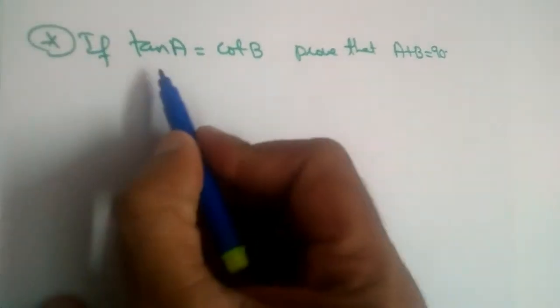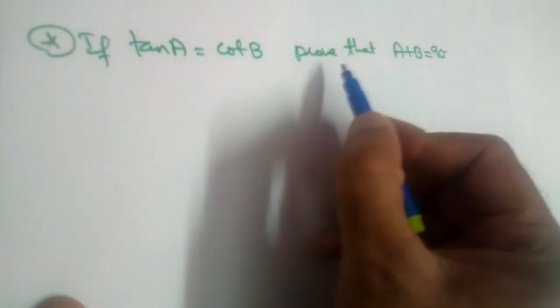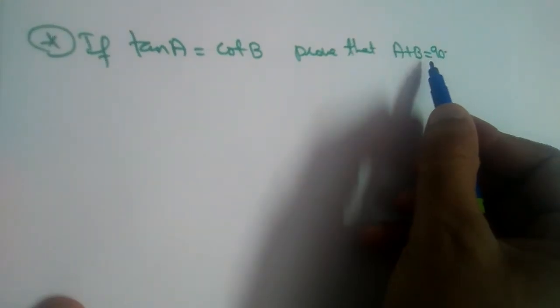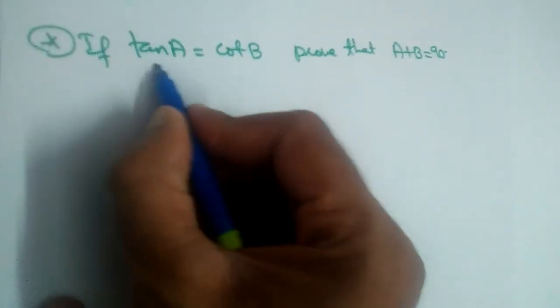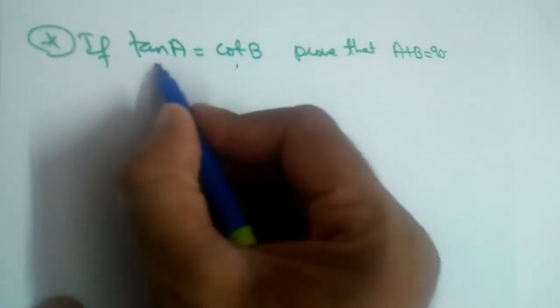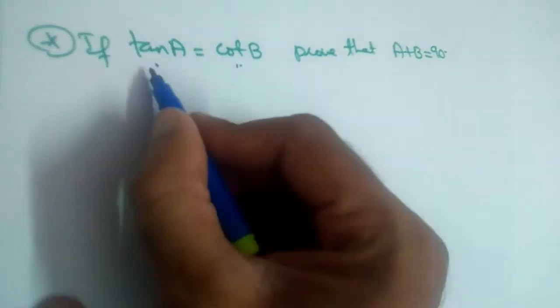We have another problem here: tan A is equal to cot B, then prove that A plus B is equal to 90 degrees. So both should be the same trigonometric ratios on LHS and RHS, right?